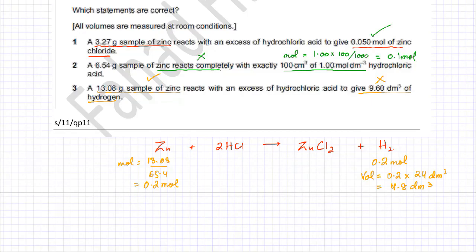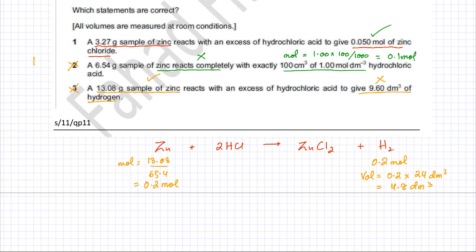Finally, since option number 2 is incorrect and option number 3 is incorrect, and only option number 1 is correct, then according to the answer scheme, the option you're going to circle is option D — that only statement 1 is correct.